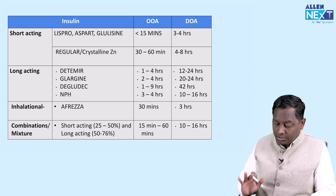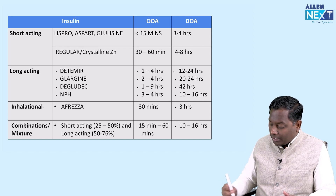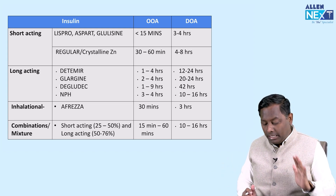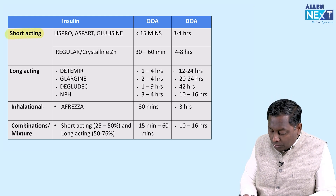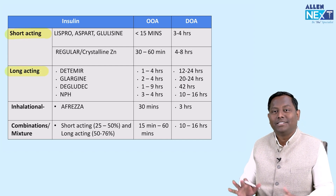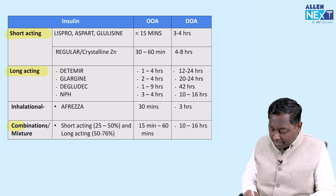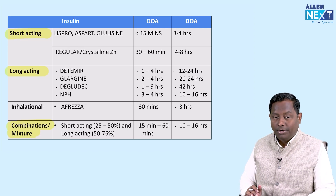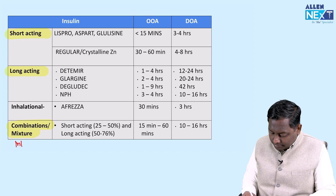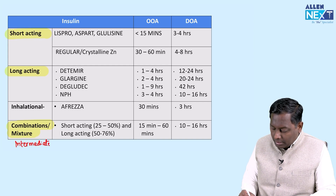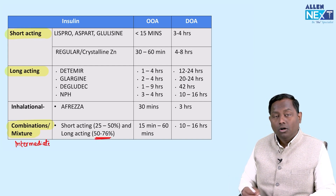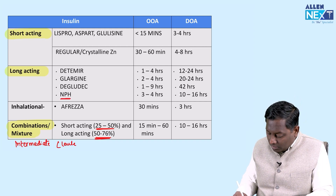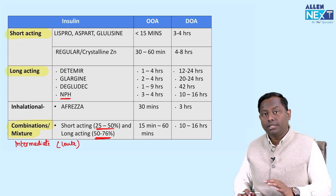Now, according to the recent Goodman-Gilman 14th edition, insulin is classified simply as shorter acting and longer acting — that's it. There is also an intermediate acting category, which is a combination of shorter and longer acting insulins, where approximately seventy percent will be longer acting and around thirty percent will be shorter acting agents.